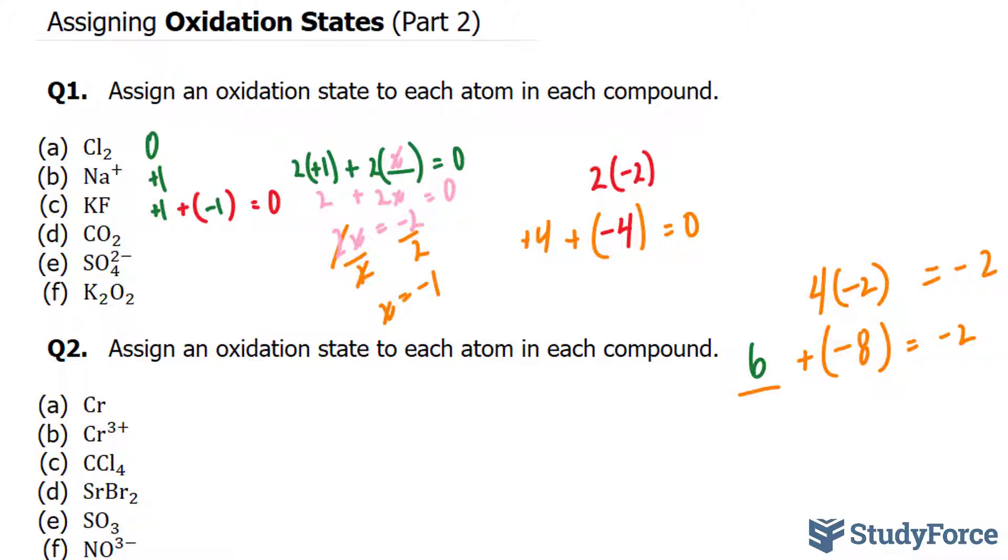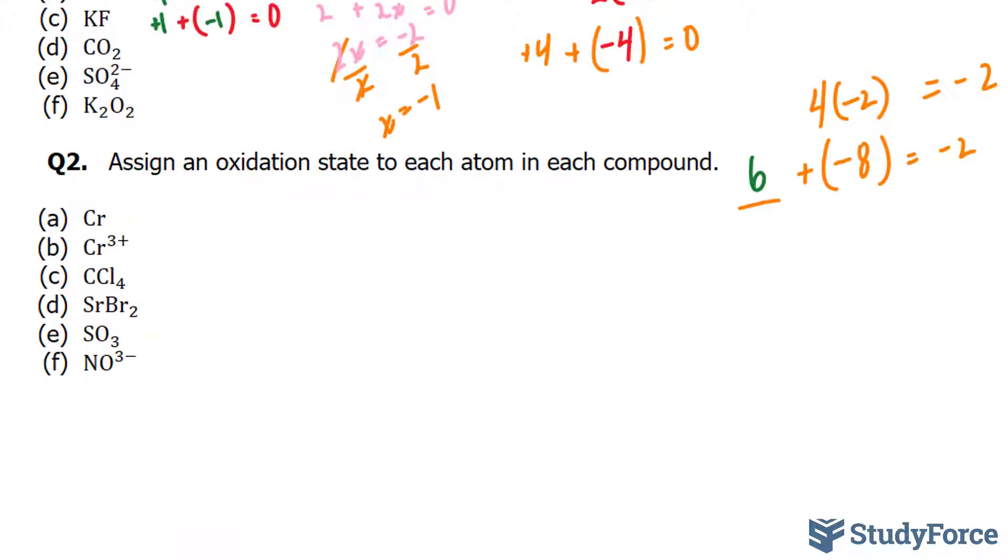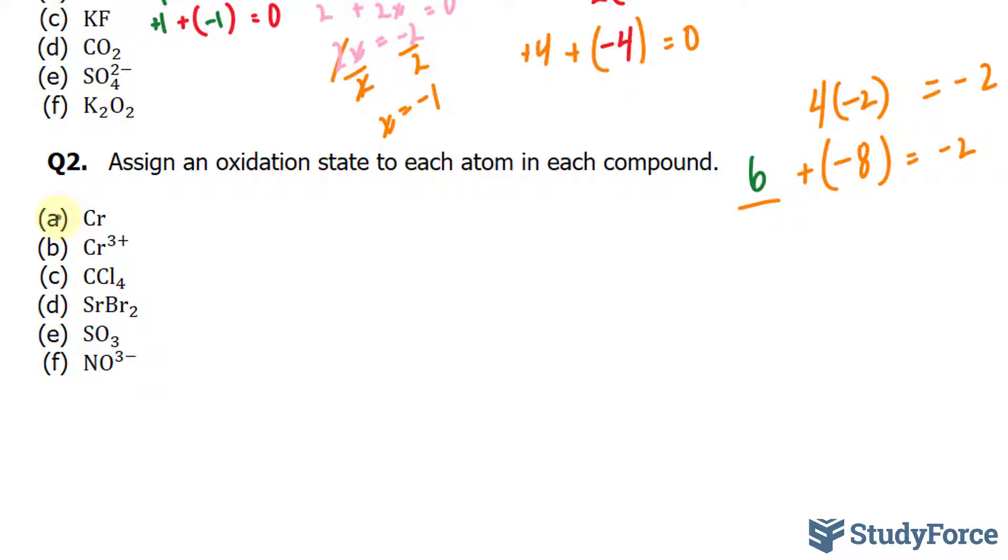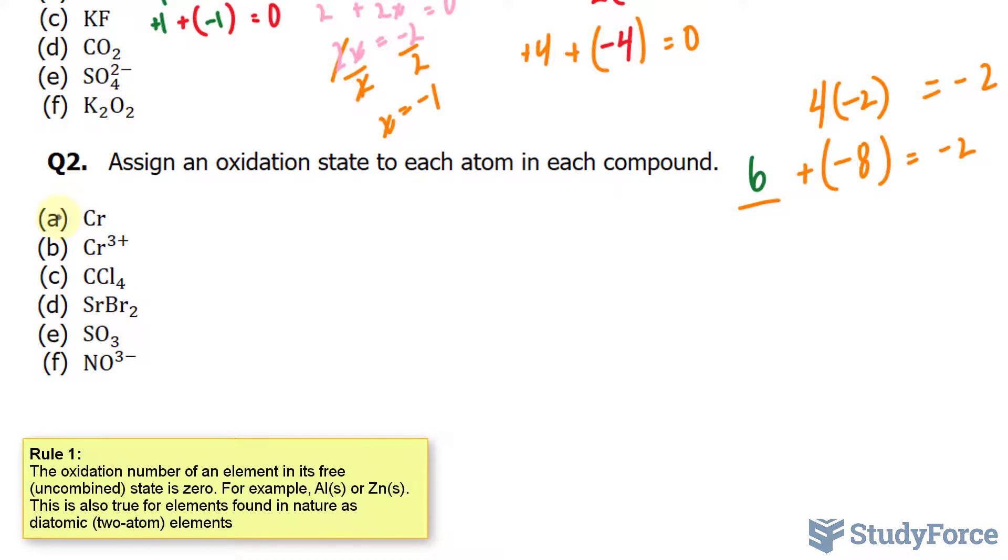In part 2 of this series where we assign oxidation states, we'll continue answering where we left off. We left off in question 2, where we are expected to assign an oxidation state to each atom in each compound. Let's start with A. We have the element chromium. Since this is an element on its own, a free element, it has an oxidation state of 0.